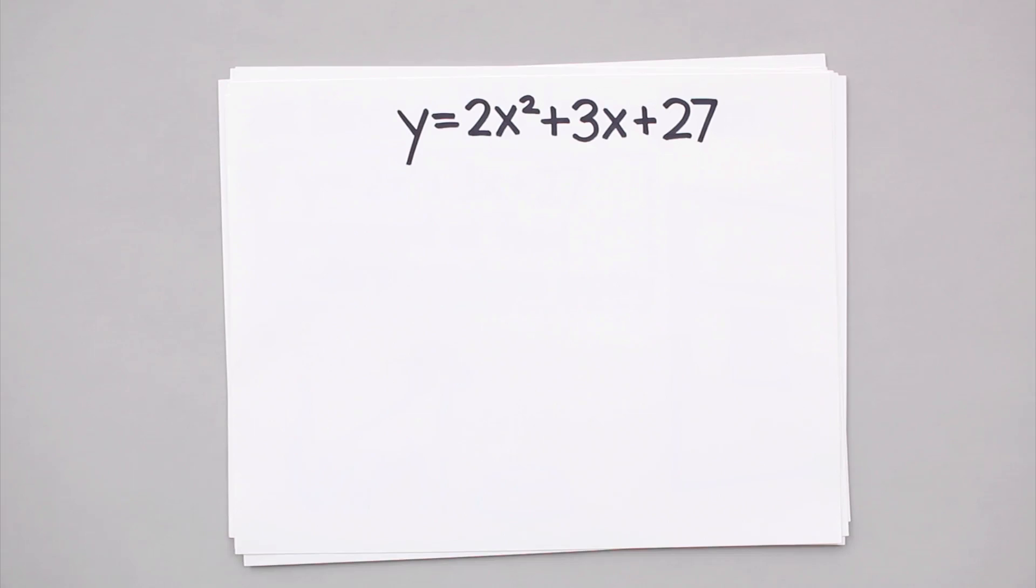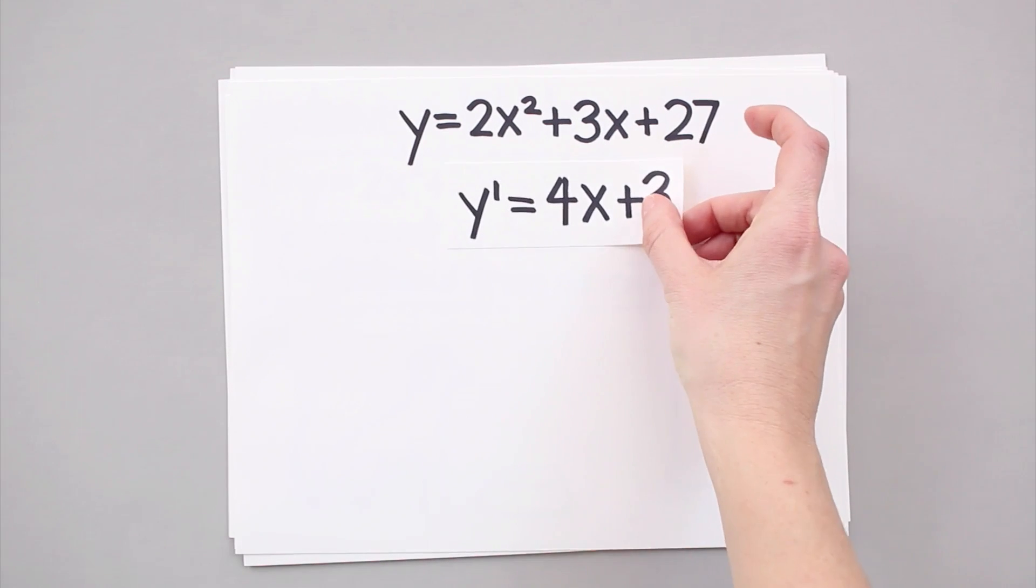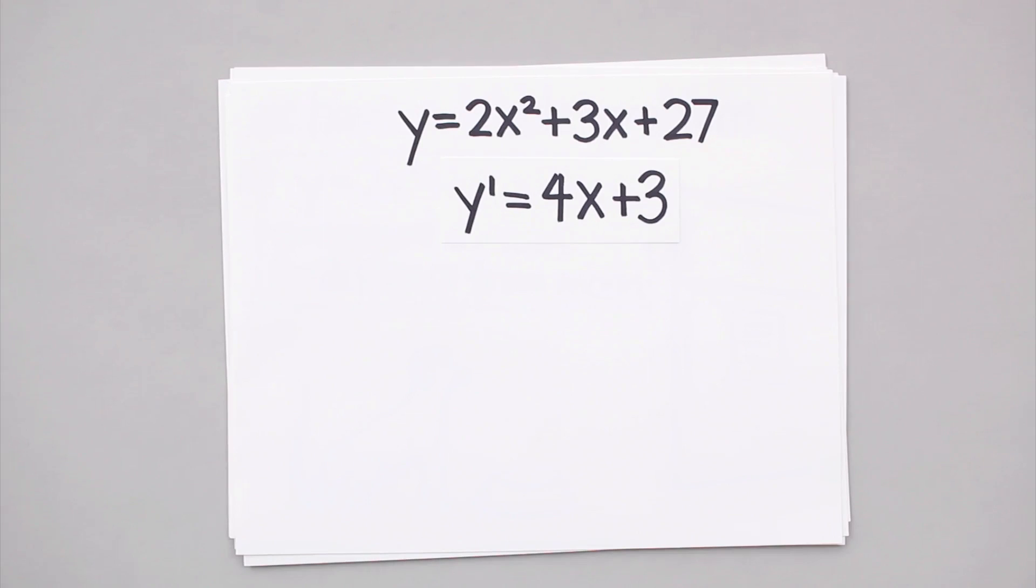So let's take the derivative of the function that our neighbor gave us. We use power rule to find the derivative of the polynomial function, and we get that the derivative is equal to 4x plus 3.